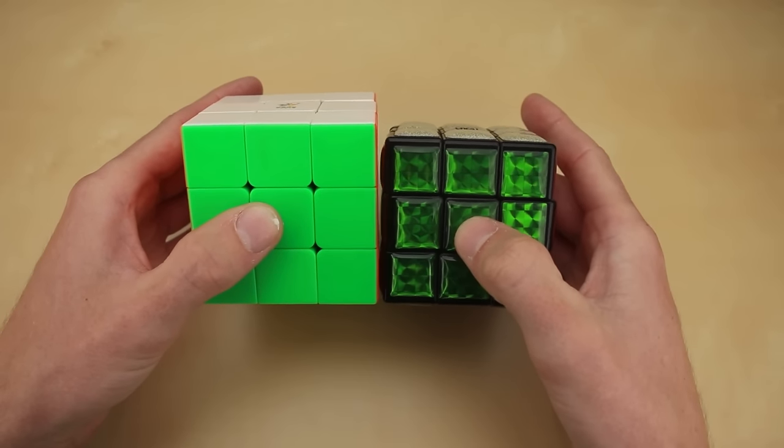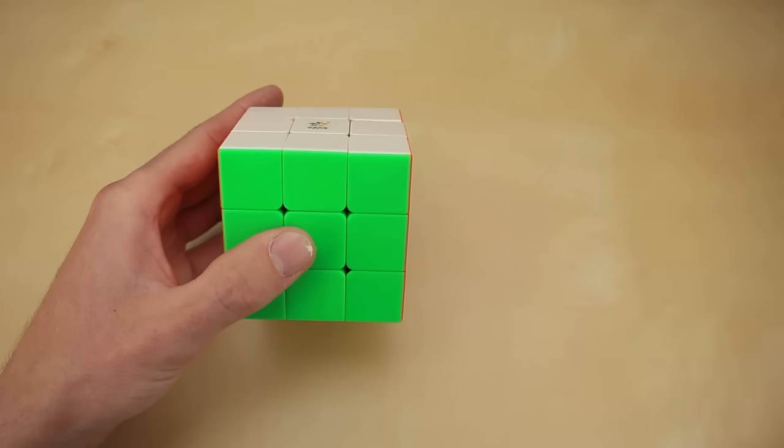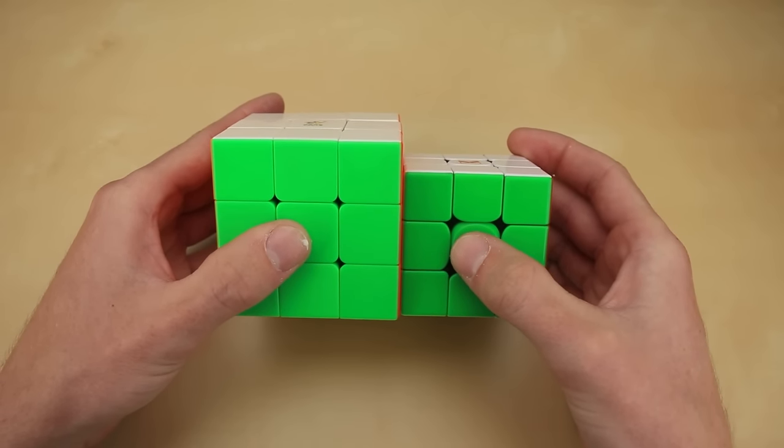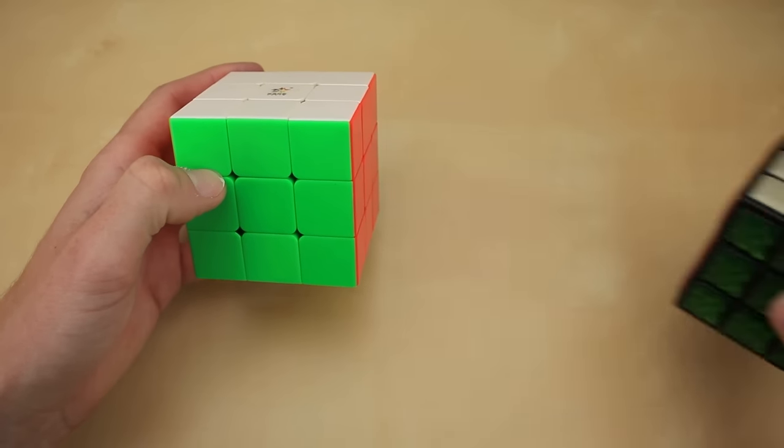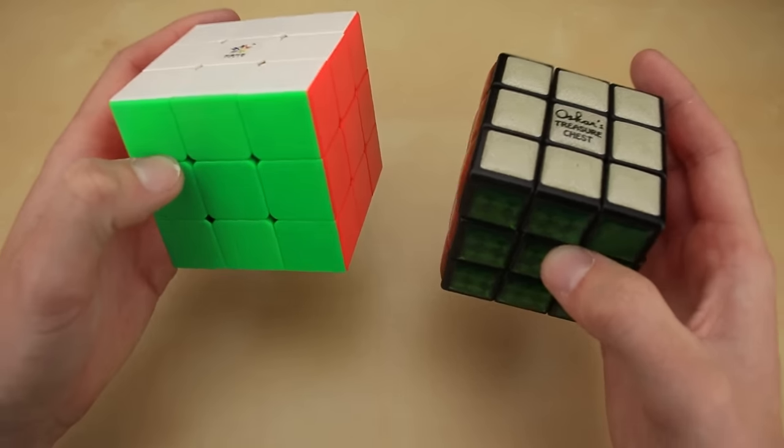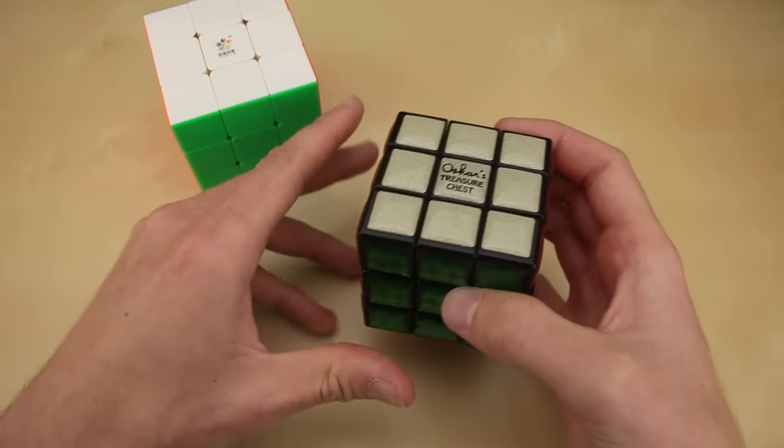Comparing the two, you can see that the Yushin treasure chest is much bigger, and it's absolutely massive compared to a normal sized Rubik's cube. It comes in both black and stickerless, whereas the original only came in stickered, but the biggest difference between the two is the locking mechanism.